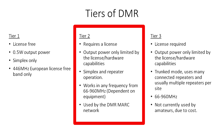DMR has three tiers, ranging from licence-free low-power handhelds that work back-to-back only, all the way up to wide area trunking networks. In this video we will discuss only tier 2, which is the tier of DMR most commonly used in business and amateur systems.